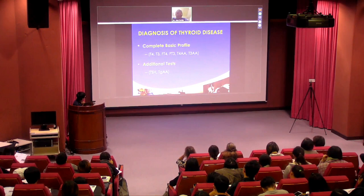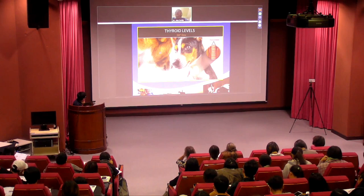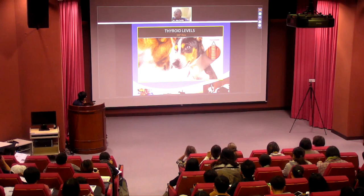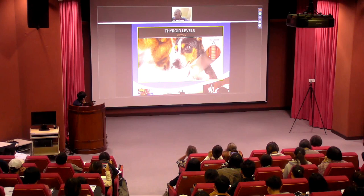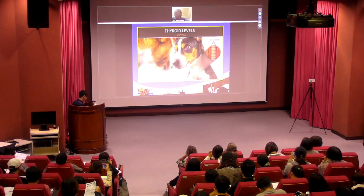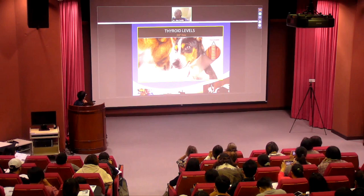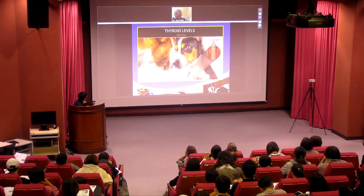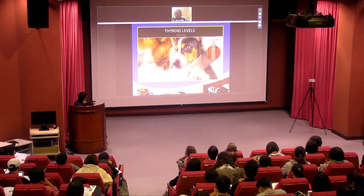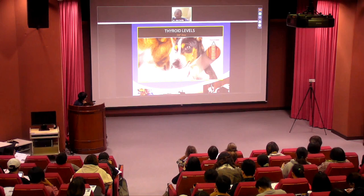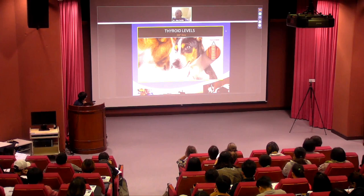The thyroid gland in the neck is a butterfly-shaped organ in front of the trachea that you can palpate on either side. If the thyroid gland has a tumor — for example in a cat or an older dog — you can very often palpate the nodule. However, some thyroid tumors, especially in the dog, are located in the chest, so you may not feel them in the neck.